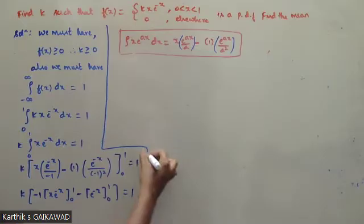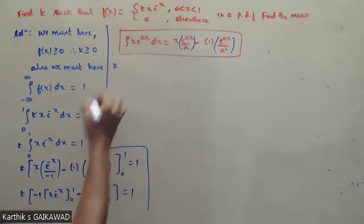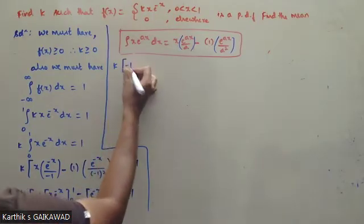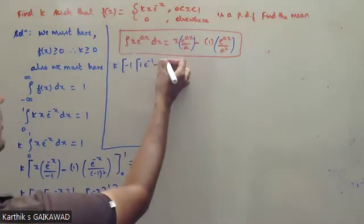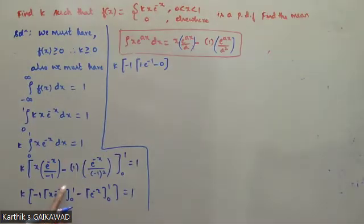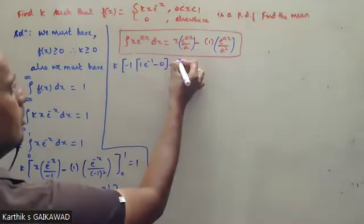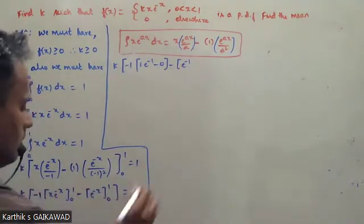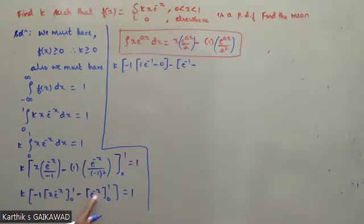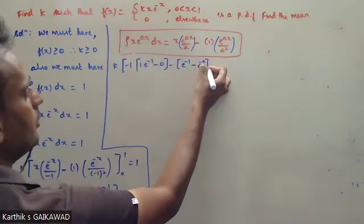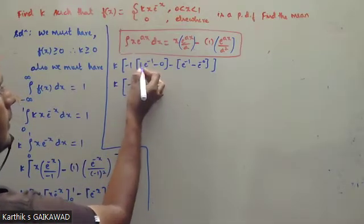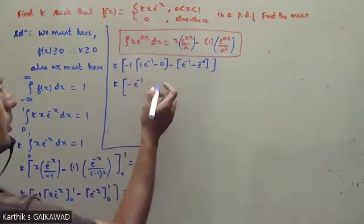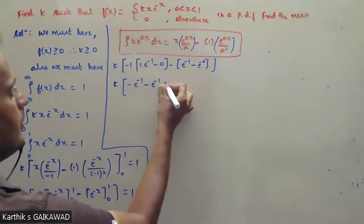Evaluating the limits: k times, at the upper limit, 1 into e^(-1) minus 0 into e^0 — 0 into anything is 0. Then minus: at the upper limit e^(-1), and at the lower limit e^(-0) equals 1. So we get k times minus e^(-1), minus e^(-1), minus into minus plus e^0, which is 1.